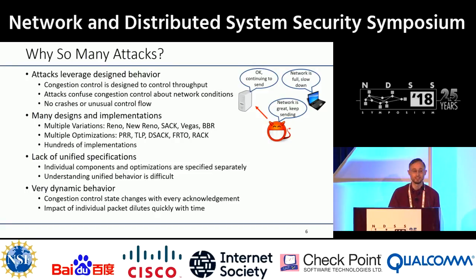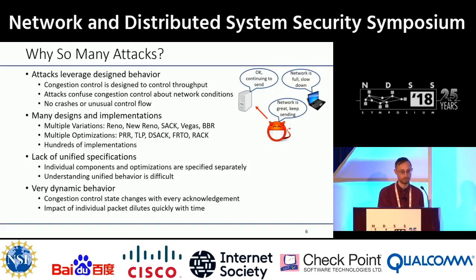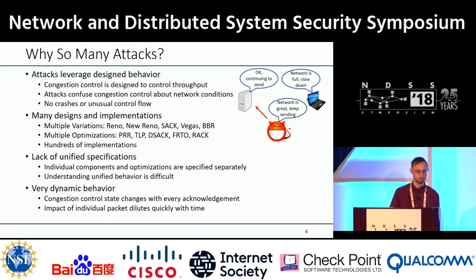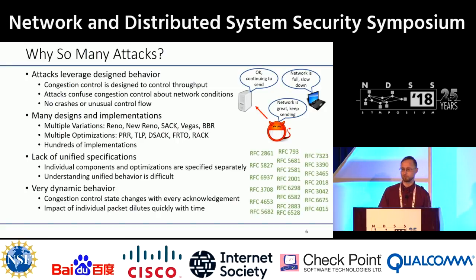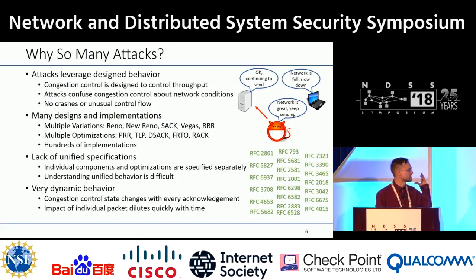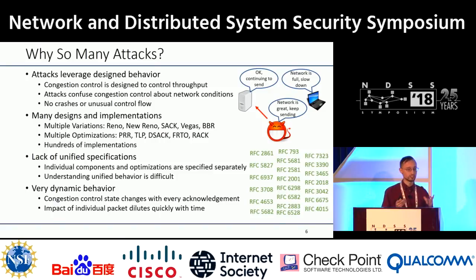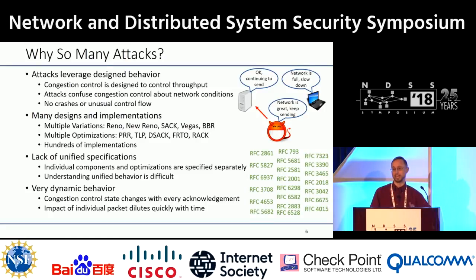Additionally, there are many designs and implementations of congestion control with variations like Reno, New Reno, Cubic, SACK, Vegas, and BBR, among others, and additional optimizations like PRR, TLP, FRTO, and DSACK — all in combination with the hundreds of implementations we saw earlier. This is compounded by a lack of unified specifications, as all these components and optimizations are specified separately. This is a partial list of the RFCs you need to read and understand to handle modern TCP congestion control, making it incredibly difficult to understand the unified behavior of even a single implementation. Additionally, congestion control has very dynamic behavior where state changes often with every acknowledgment, but the impact of any given packet dilutes very quickly.